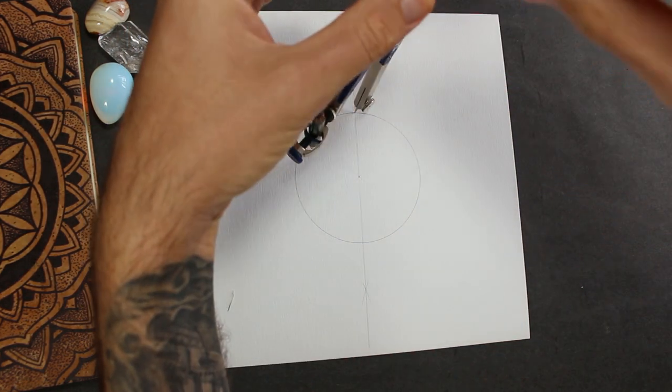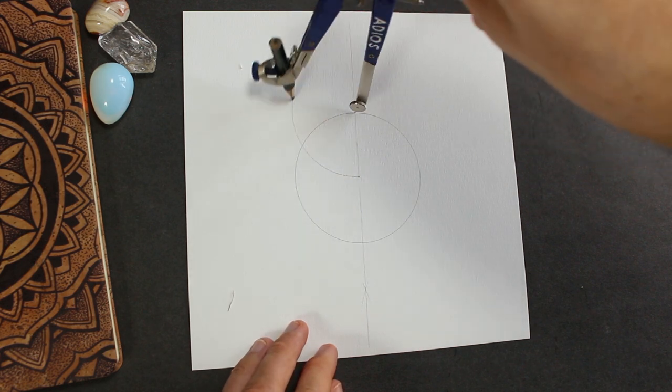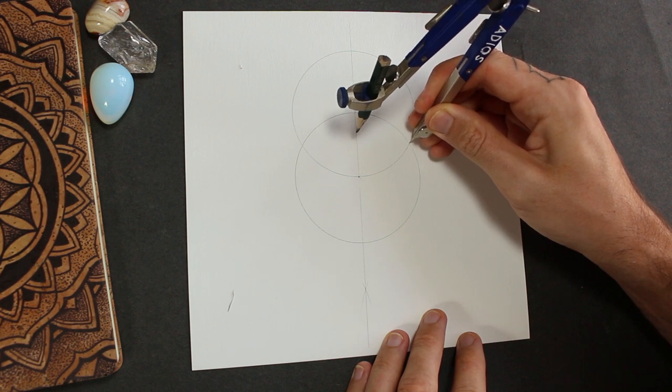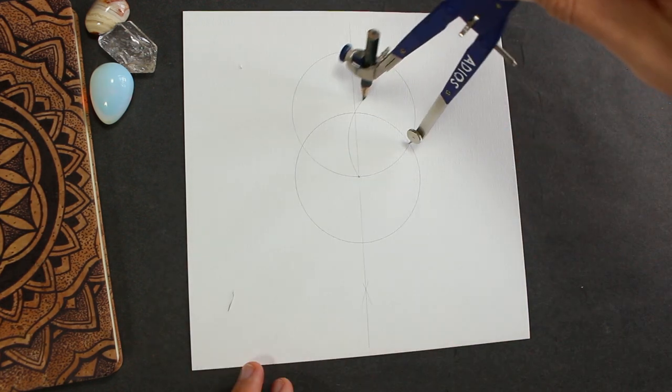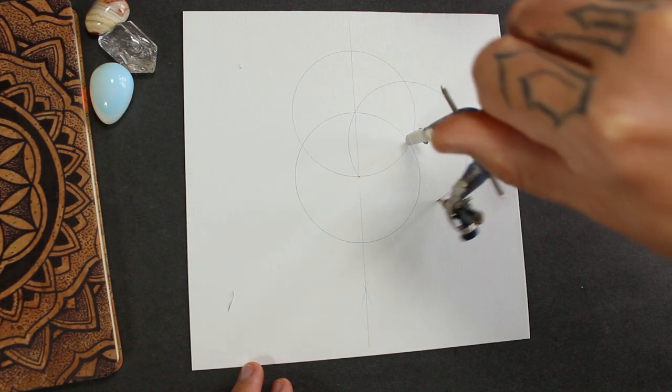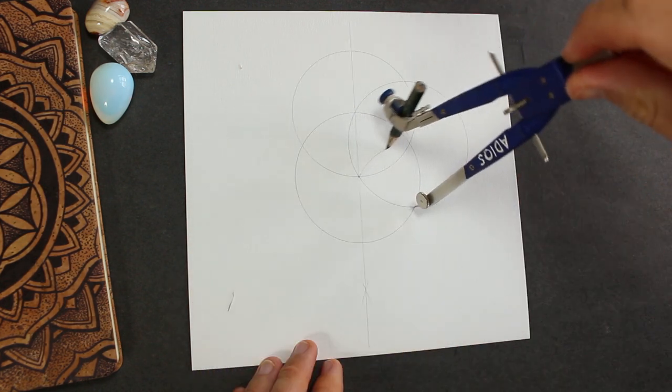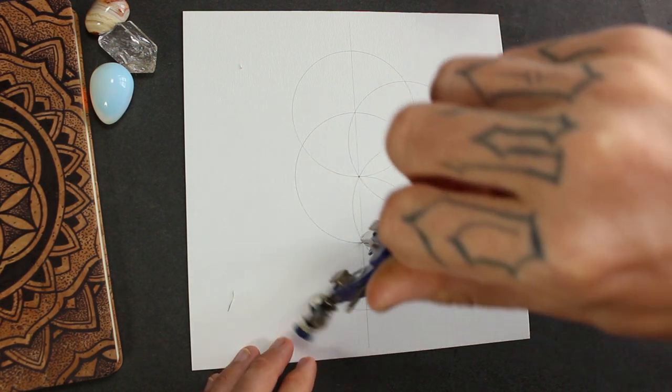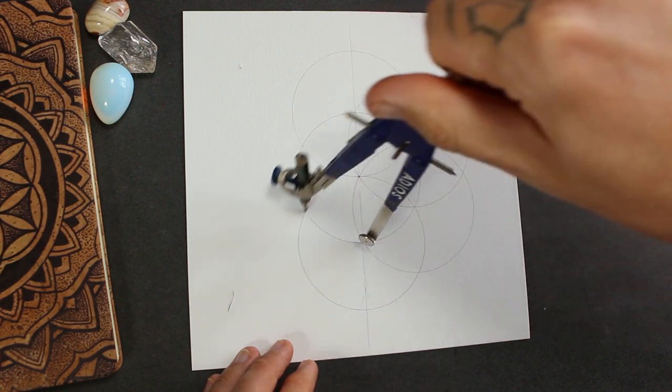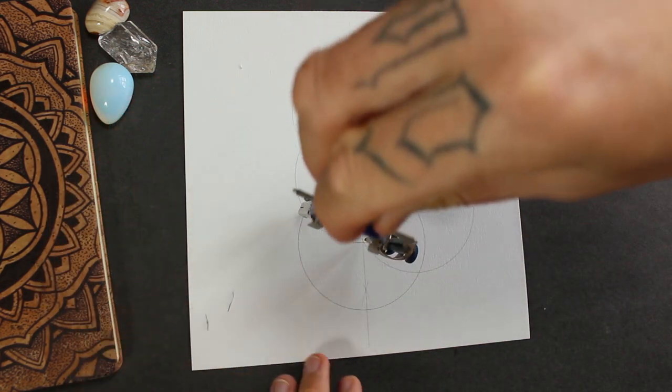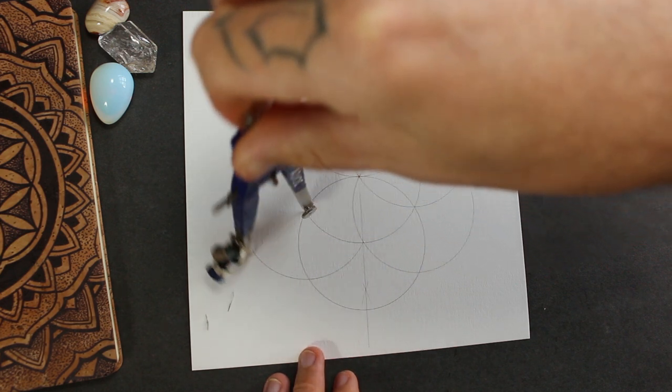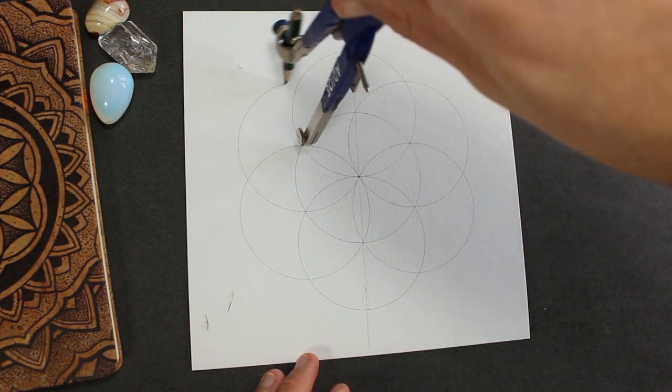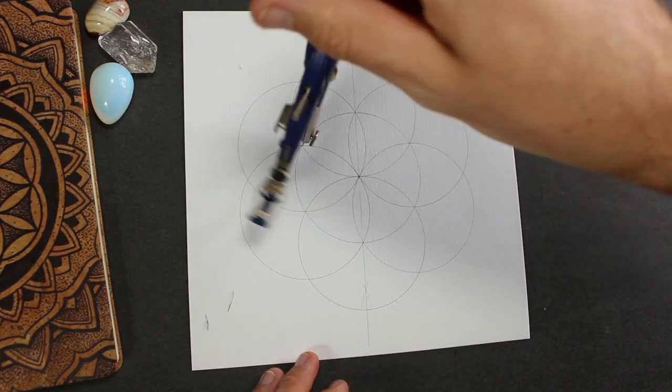To do that we just follow the line up to the top of the circle. We draw another circle, move down to the next point where the circles cross, get to the next point. So we've got the seed of life.